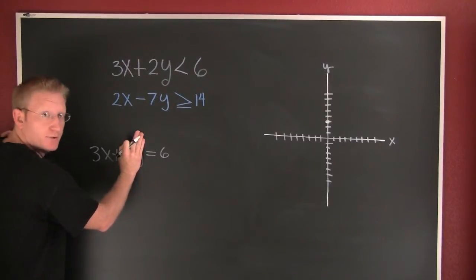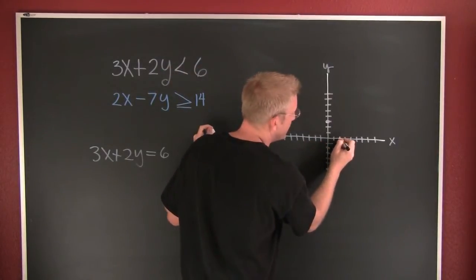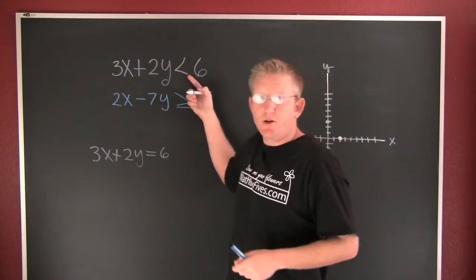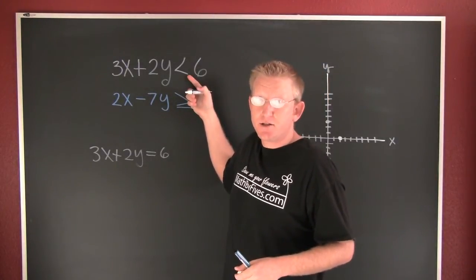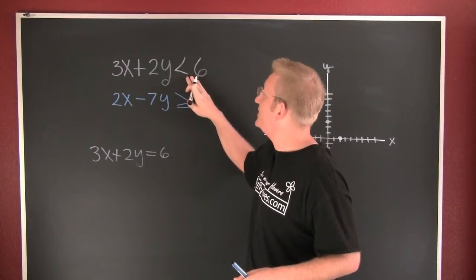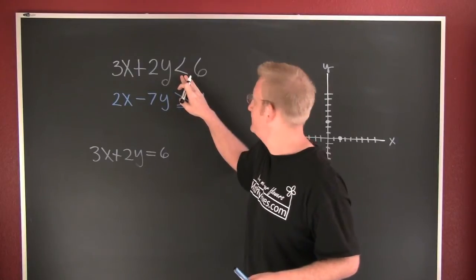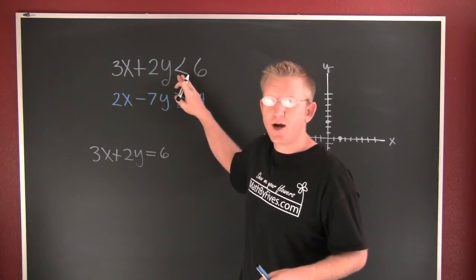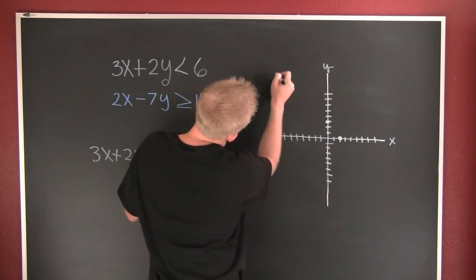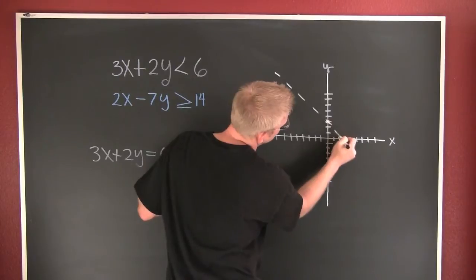And then if I do the same thing and try to find the x intercept by letting y equal 0, I'm gonna find that x is gonna be 2. Now I need to determine whether or not it's dashed or solid. This one's definitely dashed because it doesn't have the equal to, see how this is strictly less than. So then I'm gonna graph a dash line through those points, connect the dots.